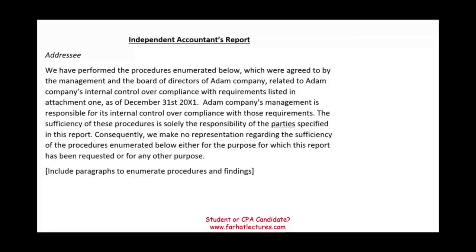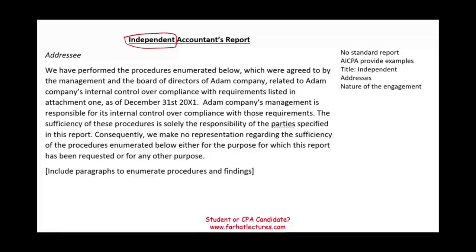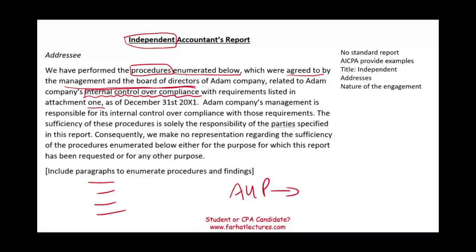Now let's take a look at the agreed upon procedures report. We have to have a title with the word 'independent,' and we have to have an addressee — practically the same as the examination. We have to describe the nature of the engagement: we have performed the procedures enumerated below, which were agreed to by management and the board of directors of Adam Company. Here we are reporting on Adam Company's internal control over compliance. In an examination, we did the examination for compliance with the requirement; but in an AUP, we can do an engagement on internal control over compliance, as listed in Attachment 1.